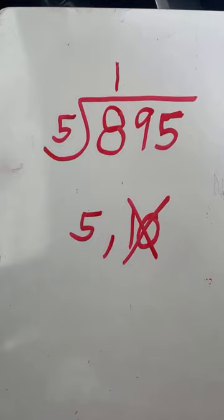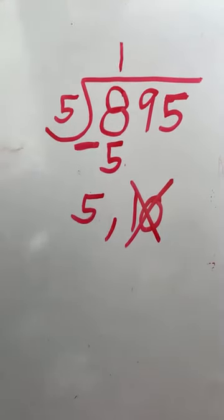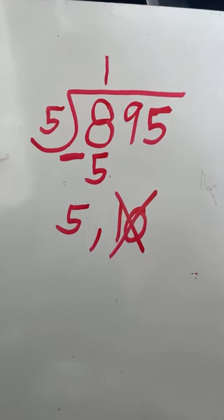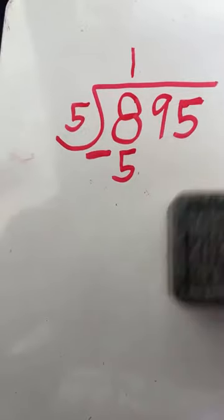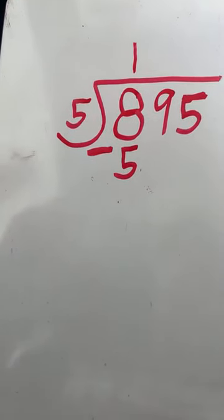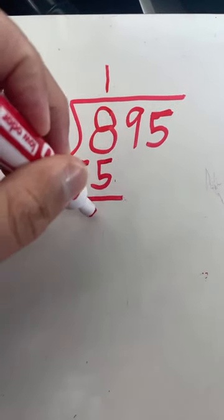5 was as close as we could get to 8 without going over, so 5 is what we need to subtract to find our remainder. 8 minus 5 equals 3.